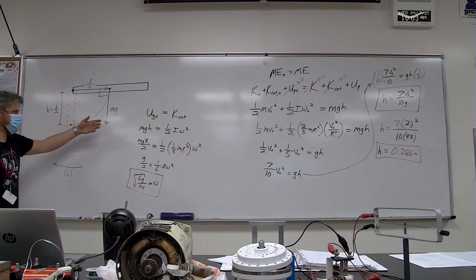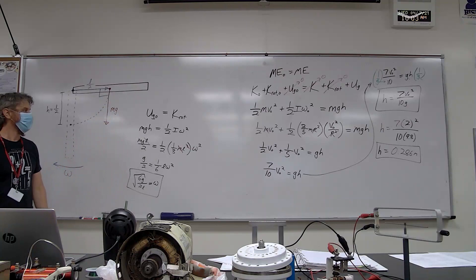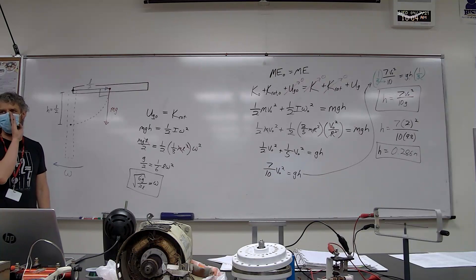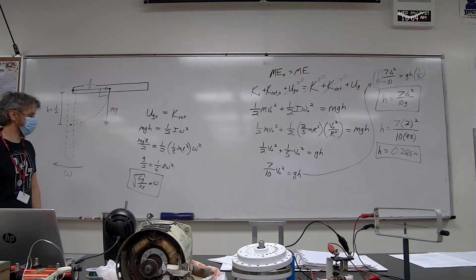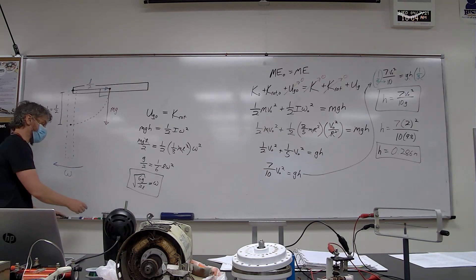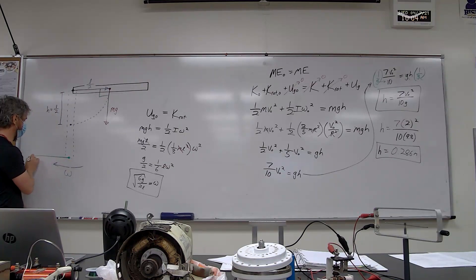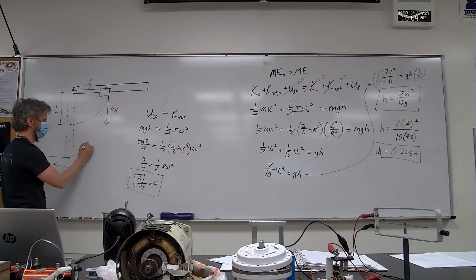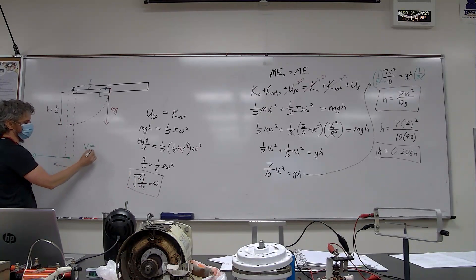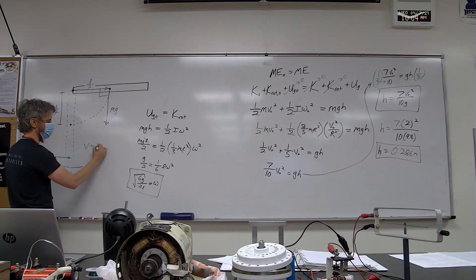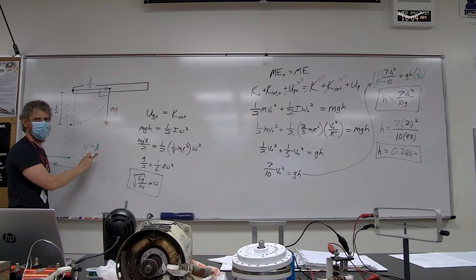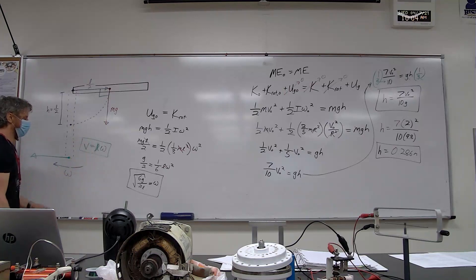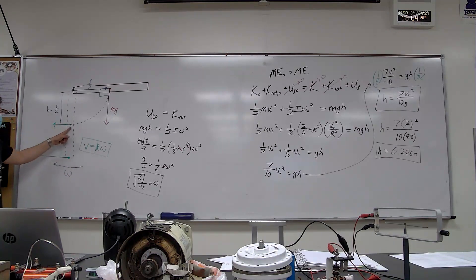Sometimes these problems ask for the linear velocity of the tip of the rod at that point. Then you just use the angular velocity you determined and relate it to linear/tangential velocity using v = Lω, where L is the radius of the circular arc for the tip. For a point closer to the center, the radius is smaller and thus the velocity is smaller.